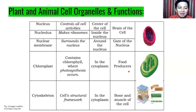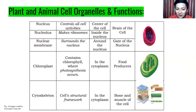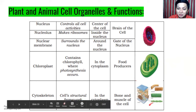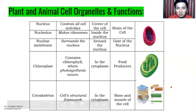Next, we have cytoskeleton. Cytoskeleton — from the word skeleton — is the cell's structural framework. It can be found in the cytoplasm. They are like the bones and muscles of the cell, giving the cell its structure.